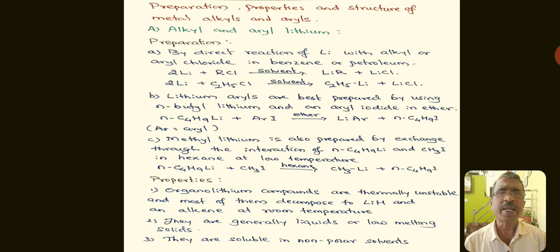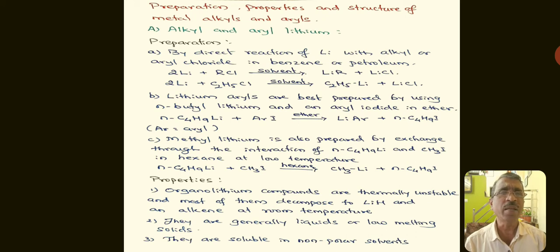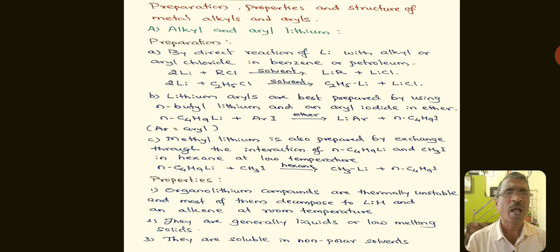Another method is that lithium aryls are best prepared by using n-butyl lithium and an aryl iodide in ether. When n-butyl lithium is treated with aryl iodide like phenyl iodide or benzyl iodide in the presence of ether, we get phenyl lithium or benzyl lithium and n-butyl iodide.